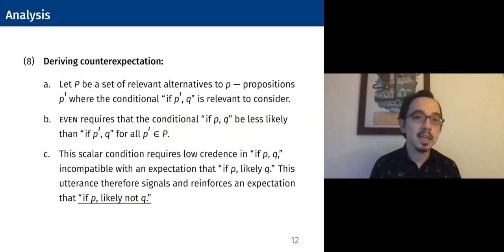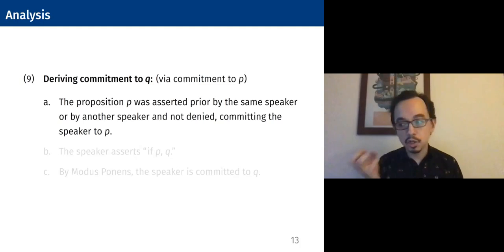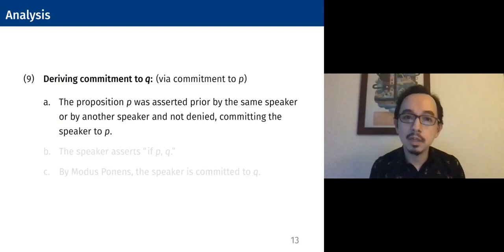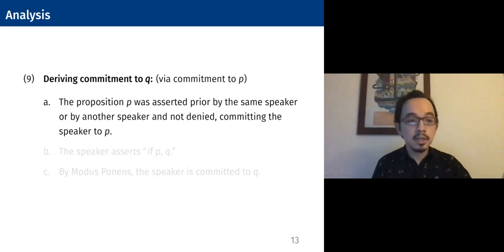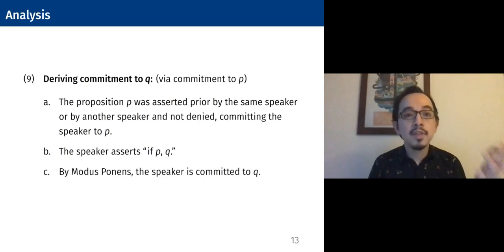We furthermore want to derive the commitment the speaker has to Q. This is a conditional — if it's literally something like 'if P, Q,' that by itself normally doesn't commit a speaker to the consequent Q. So we need to derive that additional bit. There are two ways of doing this. One is via commitment to P. The proposition P was asserted either by the same speaker or put forth by another speaker and accepted in the discourse as part of the common ground. Now the speaker asserts 'if P, Q,' and if we already agree on P, then by modus ponens, the speaker is also committed to Q.